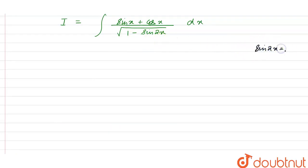Here we have to remove this under root. Sine 2x can be written as 2 sine x cos x, and this 1 can be written as sine square x plus cos square x. I is equal to we have integral of sine x plus cos x.